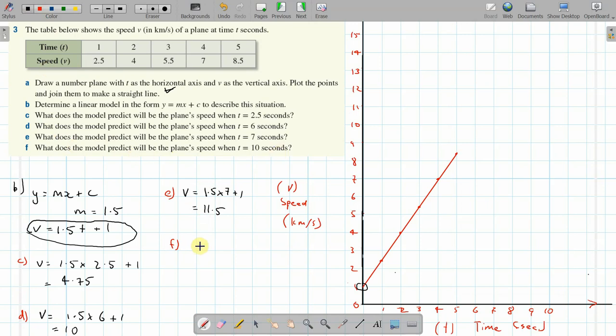Part f: when speed is 10, t equals 10. 1.5 times 10 plus 1, that's 15 plus 1 is 16. There we go, that's question 3 done.